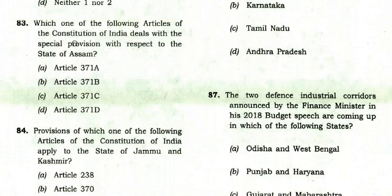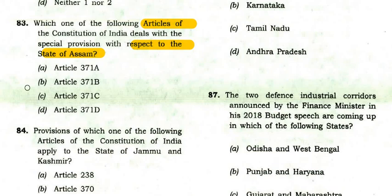Which article of the Constitution of India deals with special provisions with respect to the state of Assam? The answer is Article 371B.